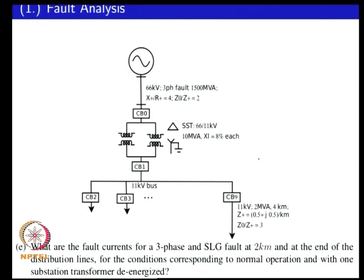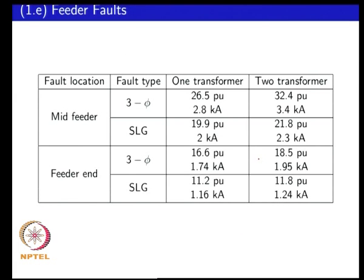The results are summarized in a table. As you go further away from the substation the fault current level is lower compared to what it was at the secondary side of the transformer, because you now have the added feeder impedance. The fault current level for the two-transformer case is higher — not double, but higher — than the single-transformer case. For faults at the end of the line, the single line-to-ground fault current is lower because the added feeder impedance is dominating and reduces the fault current level.